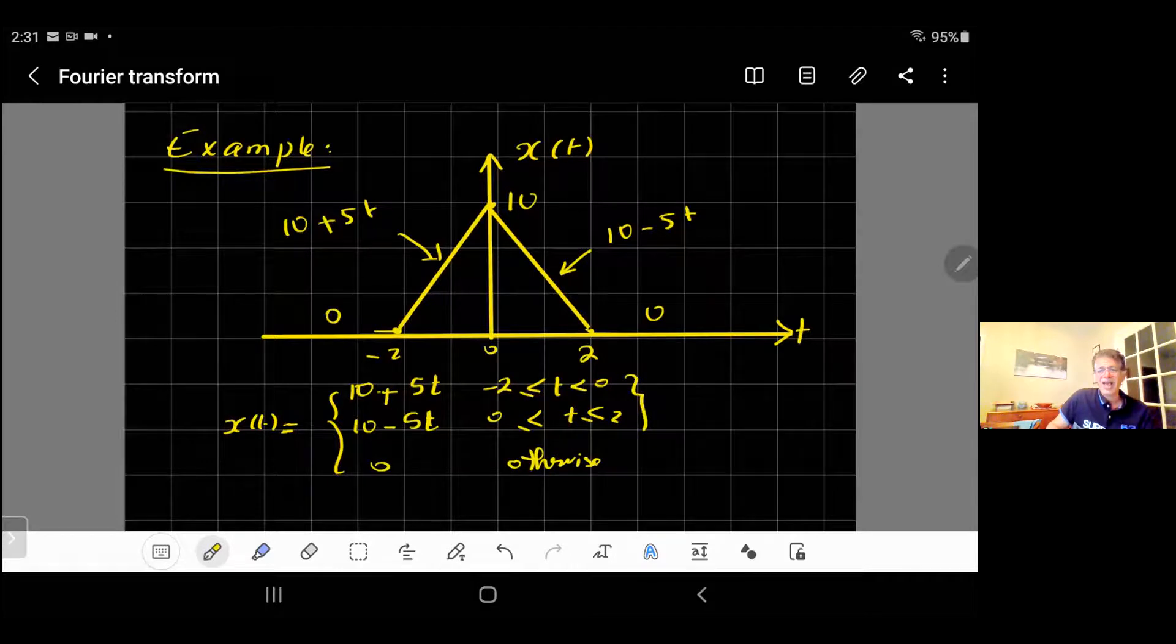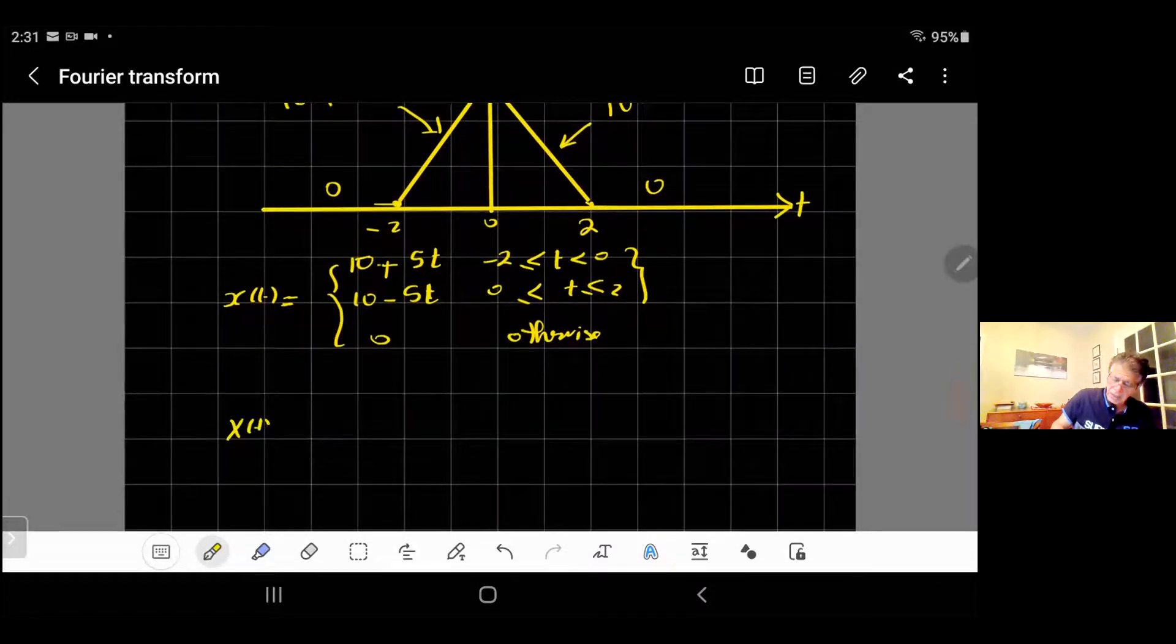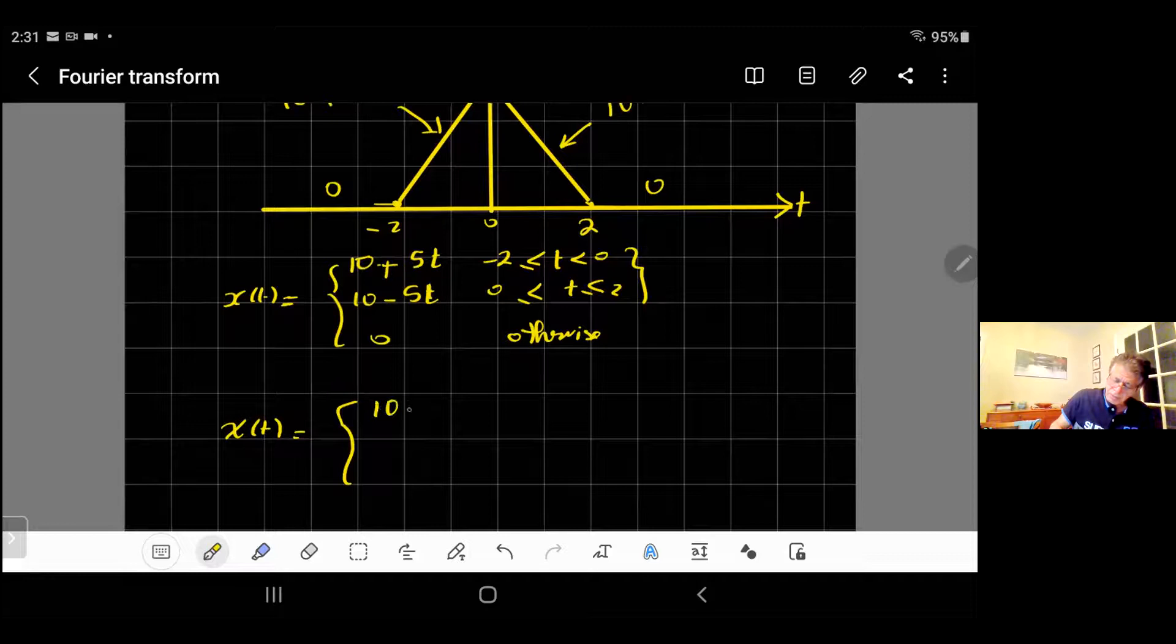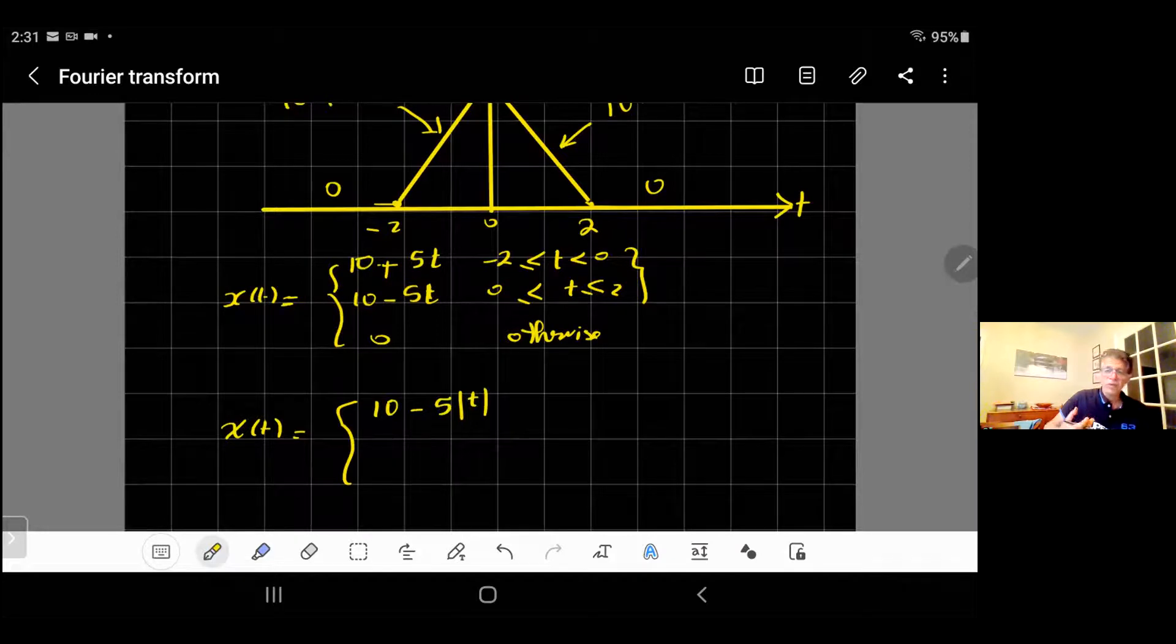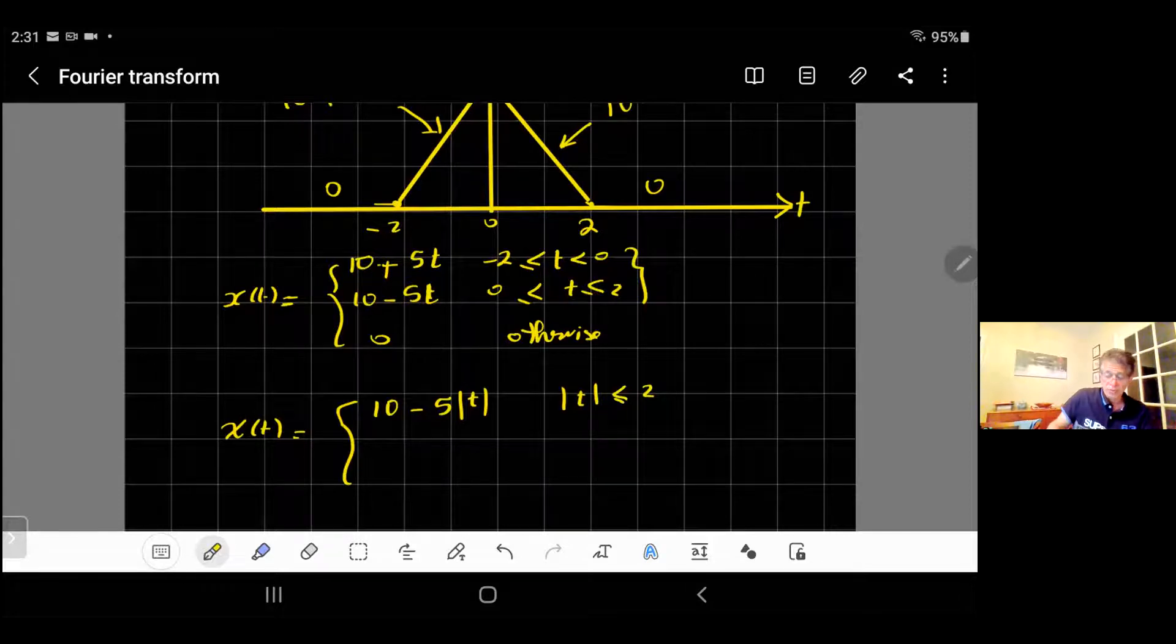This expression, both are similar except for the sign. So usually when you have something like that, you can use absolute value. So I can write it simply as 10 minus 5 absolute value of t. Absolute value of t makes the negative positive, right? So that will be when the absolute value of t is less than 2, and 0 otherwise. I simplified using absolute value because the sign is different.